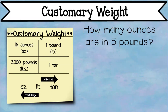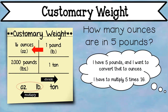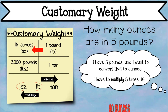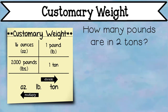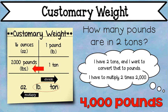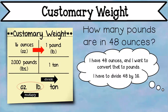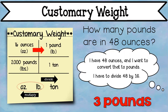Let's convert these. How many ounces are in five pounds? We're going from pounds to ounces, so we multiply: five times 16 equals 80 ounces. How many pounds are in two tons? Going from tons to pounds, we multiply: two times 2,000 equals 4,000 pounds. Here's our final example for weight: how many pounds are in 48 ounces? Going from ounces to pounds, we divide: 48 divided by 16 equals three pounds.